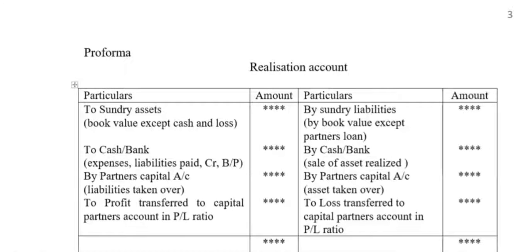Proforma of Realization Account — all students must note this proforma to solve problems based on this unit. In Realization Account, on the debit side: Sundry Assets at book value (except cash and bank). Expenses paid via cash and bank. Liabilities paid — creditors, bills payable. Partners' capital account for liabilities taken over. On the credit side: Sundry Liabilities at book value (except partners' loan). Cash and bank for assets realized. Partners' capital account if assets are taken over, and profit or loss on realization transferred to partners' capital account in profit and loss ratio.